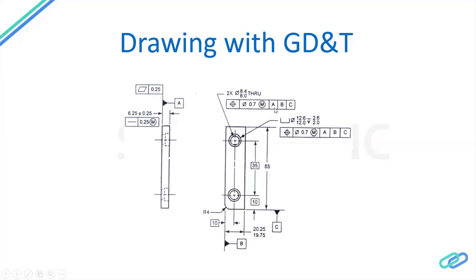The axis of the hole is specified with respect to three datums. The datum priority starts with A, followed by B, and then C. This is just one example of a feature control frame. We call it a feature control frame because we are trying to control the feature. In any feature control frame, you have to read from left to right. Try to read this particular feature control frame — we are trying to position the axis of the cylindrical hole within a cylindrical tolerance of 0.7 mm at Maximum Material Condition, with respect to datums A, B, and C.